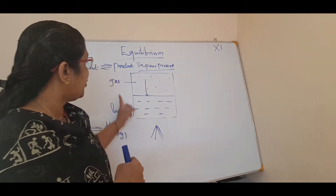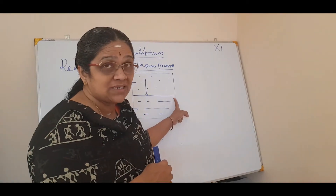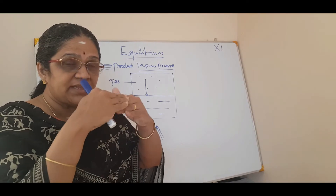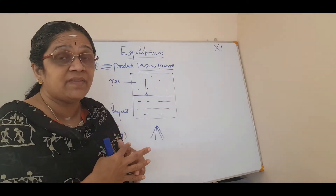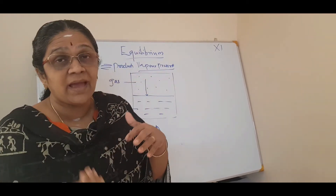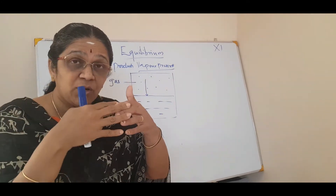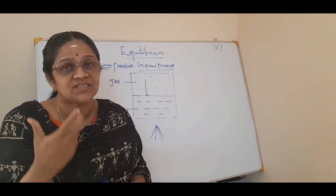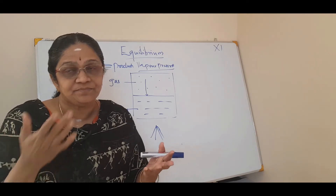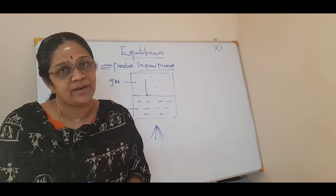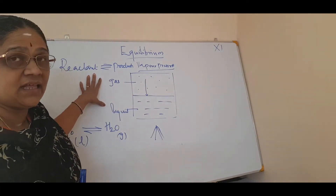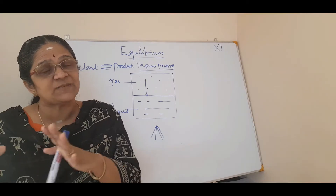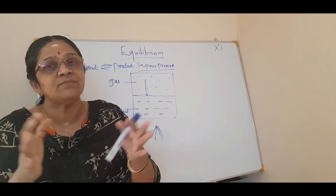There are two types of equilibrium: static equilibrium, where no transformations are happening, and dynamic equilibrium, where transformations occur because reactants are converting to products and products are converting back to reactants. Liquid-gas equilibrium is also a dynamic equilibrium, because at the liquid-gas interface a lot of activity is happening — liquids going into gas, gas coming back, and molecules colliding continuously.